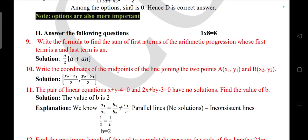Next main, eight questions each carries one mark. Question 9: Write the formula to find the sum of first n terms of arithmetic progression. Answer: n/2 (a + aₙ). Question 10: Write the coordinates of the midpoints of the line joining points (x₁, y₁) and (x₂, y₂).